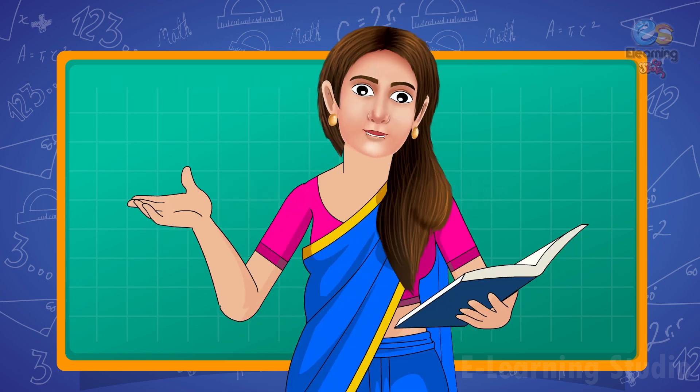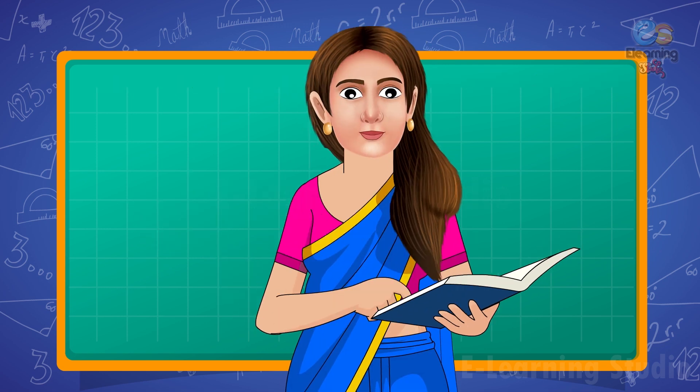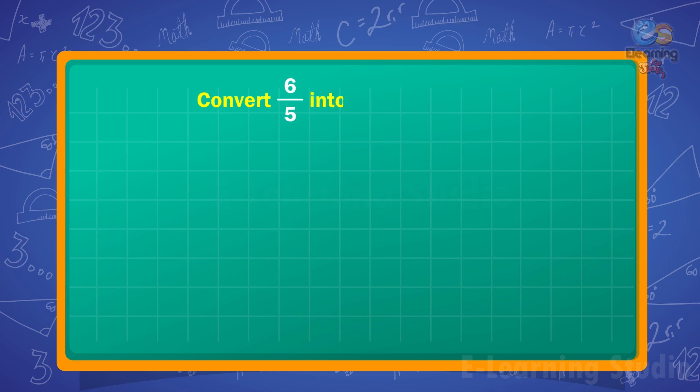Let's understand with the help of some examples. Convert 6 upon 5, which is an improper fraction, into a mixed fraction.